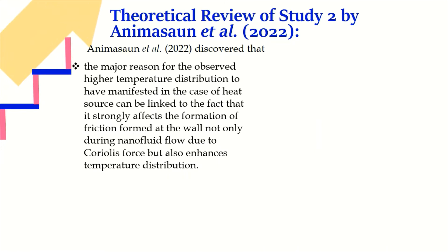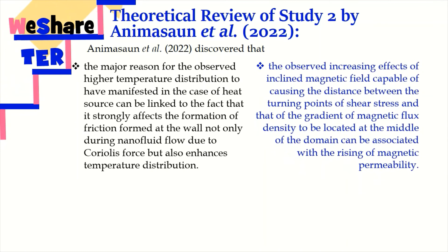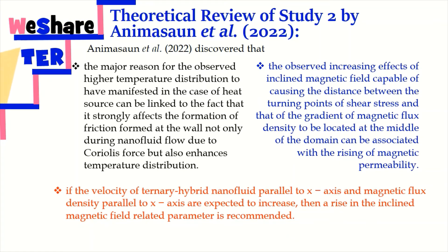The major reason for the observed higher temperature distribution in the case of heat source can be linked to the fact that it strongly affects the formation of friction formed at the wall, not only during nanofluid flow due to careerless force, but also enhances temperature distribution. The observed increasing effects of inclined magnetic field — capable of causing the distance between the turning points of shear stress and the gradient of magnetic flux density to be located at the middle of the domain — can be associated with the rising of magnetic permeability. If the velocity of ternary hybrid nanofluid parallel to the x-axis and magnetic flux density parallel to the x-axis are expected to increase, then a rise in the inclined magnetic field related parameter is recommended.